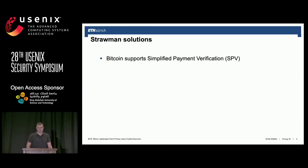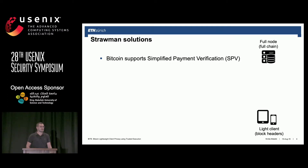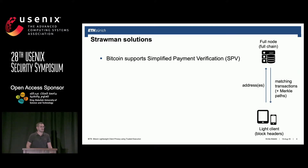How it actually works: you have a full node and the light client on a resource-constrained device like a mobile phone, tablet, or laptop. You deliver the addresses to the full node, the full node processes it, scans blocks for transactions related to that address, and gives you back the matching transactions along with the Merkle paths.